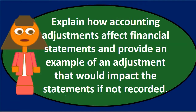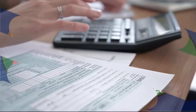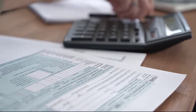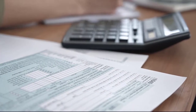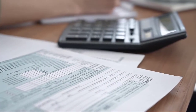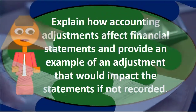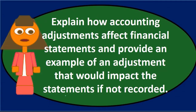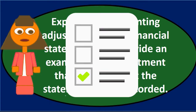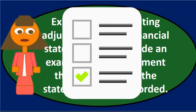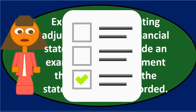We typically think of the income statement — revenue and expenses — with the adjusting process, because those are the timing accounts. But the balance sheet will be affected as well: assets, liabilities, and equity. Because adjusting entries deal with timing, we will normally have at least one balance sheet account and one income statement account impacted.